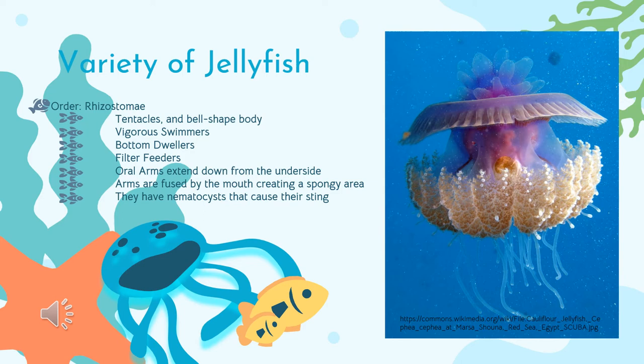These jellyfish are considered to be vigorous swimmers — they always have a lot of energy. They are also bottom dwellers, meaning they live near the bottom of the ocean. They are filter feeders, meaning they eat their food a few bites at a time rather than consuming it all at once. They also have oral arms that extend down and are joined together with their mouth, and their mouths are found in the middle of their stomach.